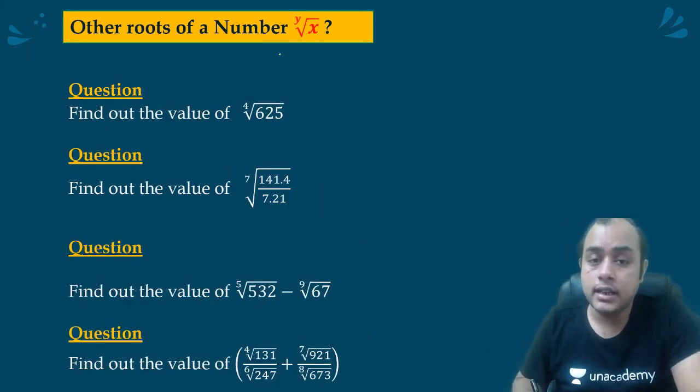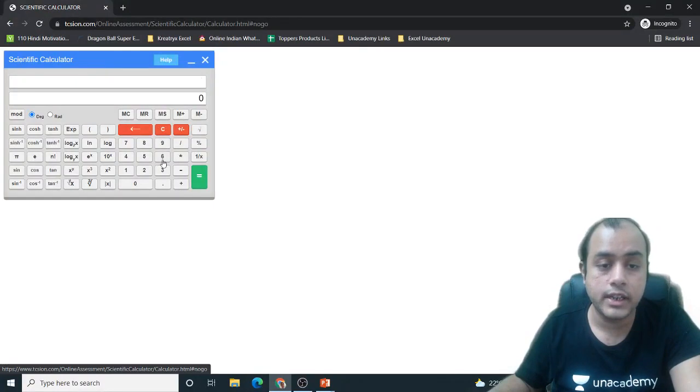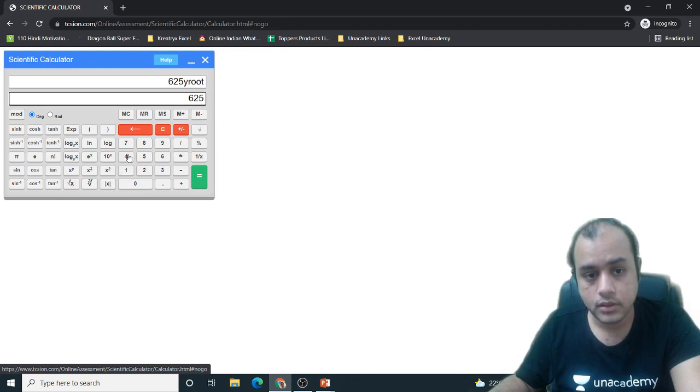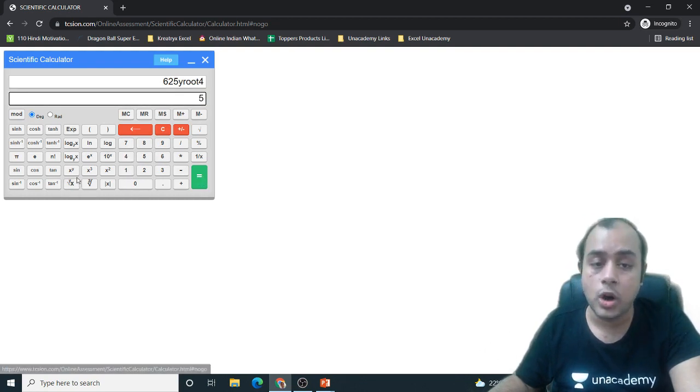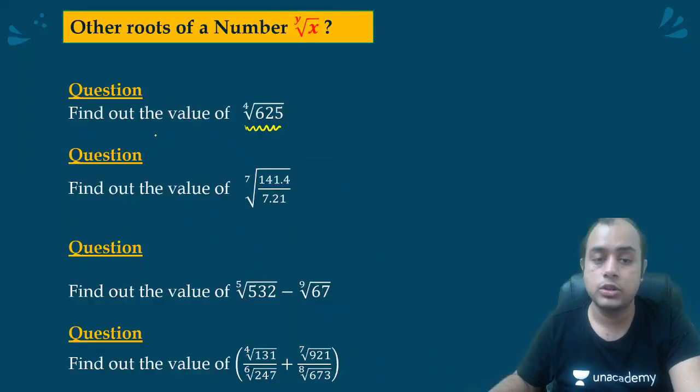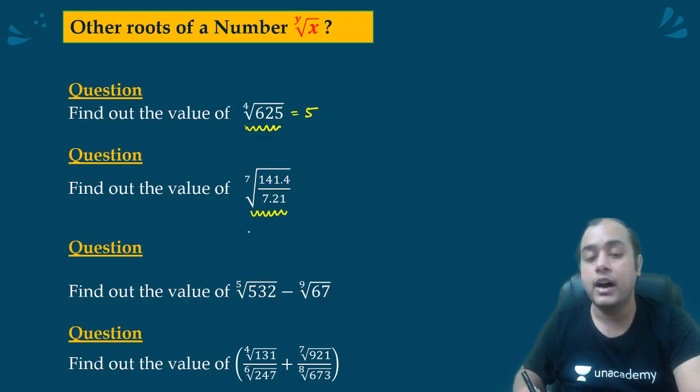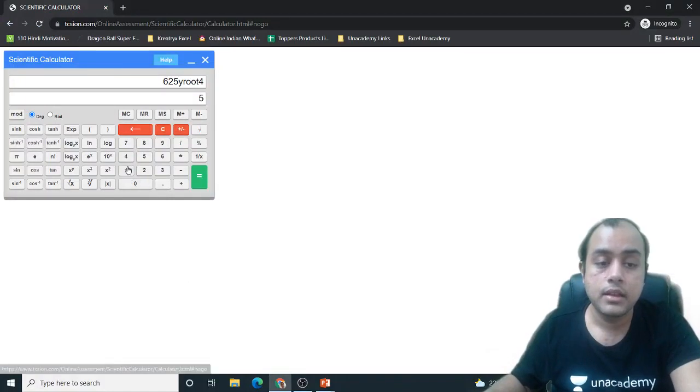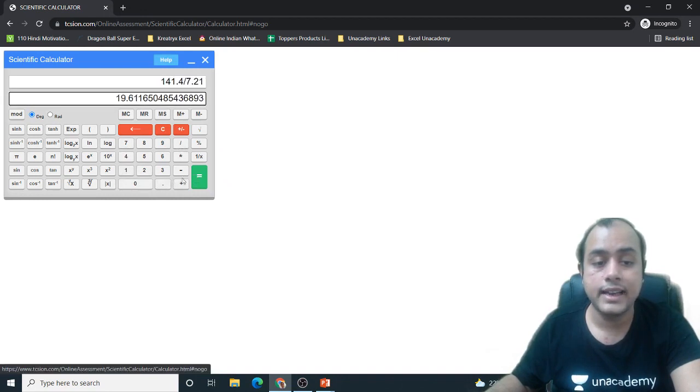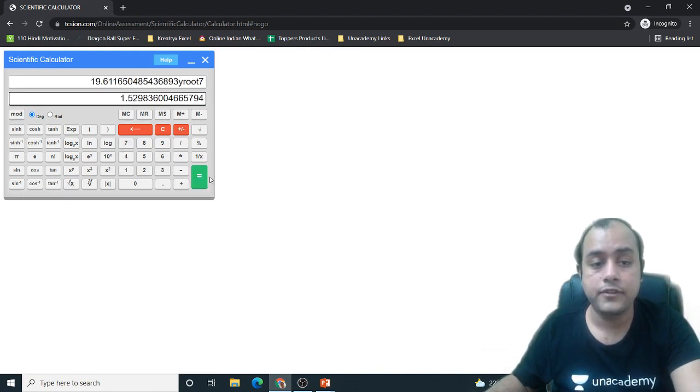Now other roots of a number like the 4th root of 625. I will enter 625, then y root 4, which is 5. First the number, then the root operation, then the root. Which root you want to calculate? 4th root is 5. Next is the 7th root of 141.4 by 7.21. I need the 7th root. First press equal to, then this yth root, 7th root, 1.5298.